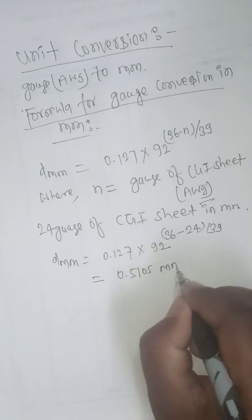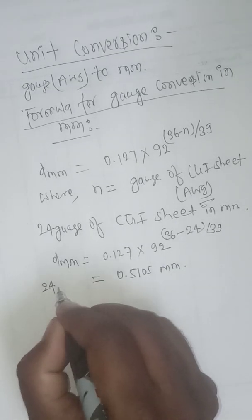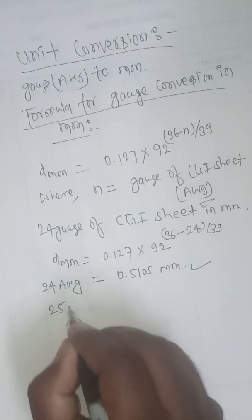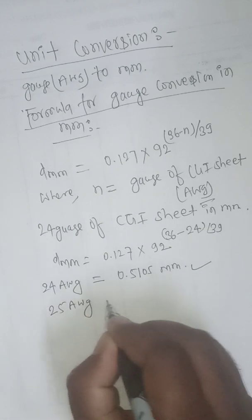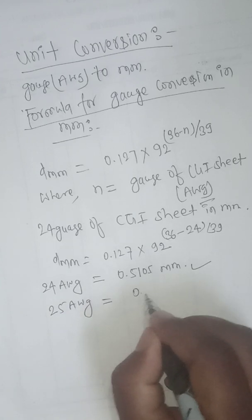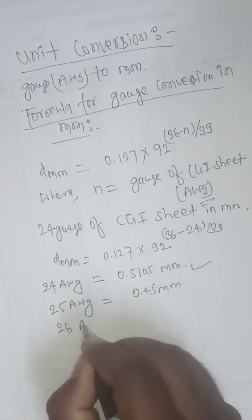24 AWG, 25 AWG, and similarly we can also find 0.45 mm for 26 AWG.